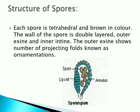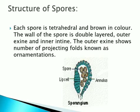Structure of the spore: in the sporangia, yellow-colored spores are visible in the figure. Each spore is tetrahedral and brown in color. The wall of the spore is double-layered: the outer layer is the exine and the inner layer is the intine. The outer exine shows a number of projecting folds known as ornamentation.